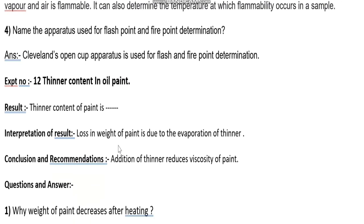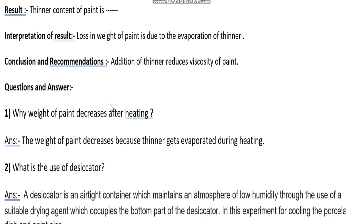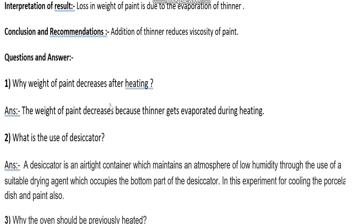The next experiment is thinner content in oil paint. In the result, write down the percentage of thinner content in the oil paint. The interpretation of result is that the loss in weight of paint is due to evaporation of the thinner. The conclusion and recommendation is that addition of thinner reduces the viscosity of paint. Question: why does the weight of paint decrease after heating? Because the thinner gets evaporated.